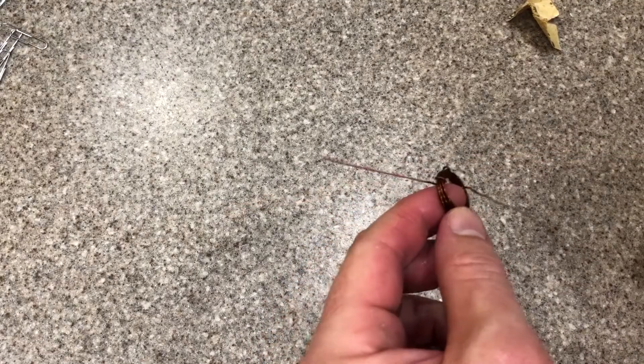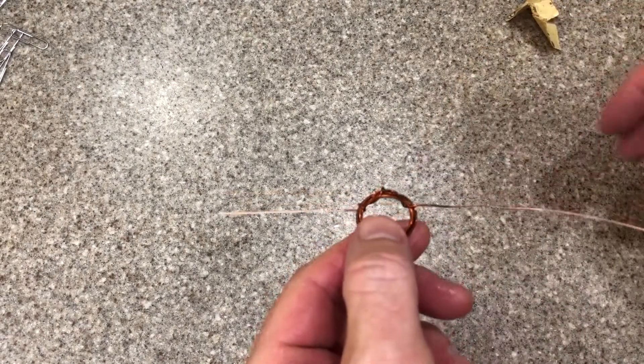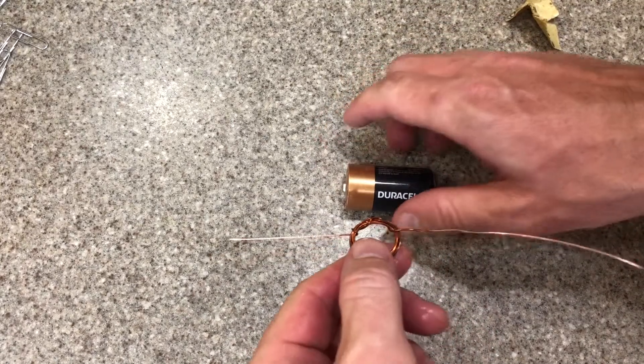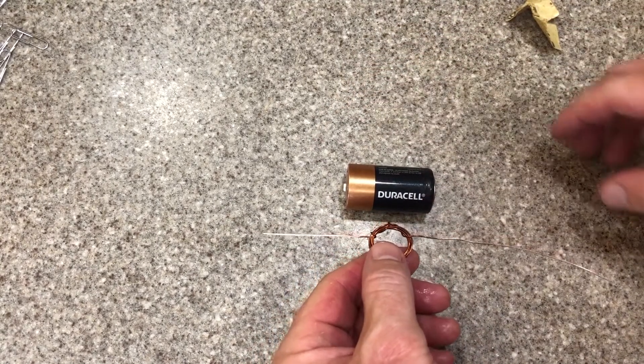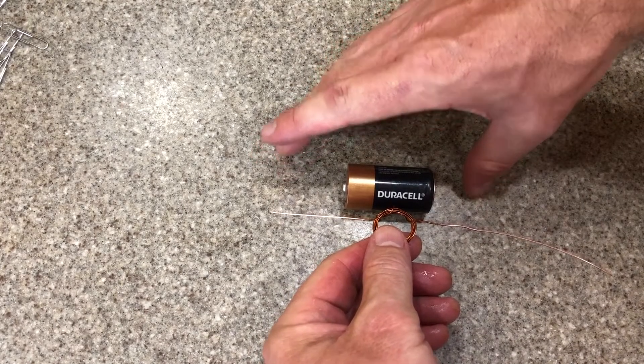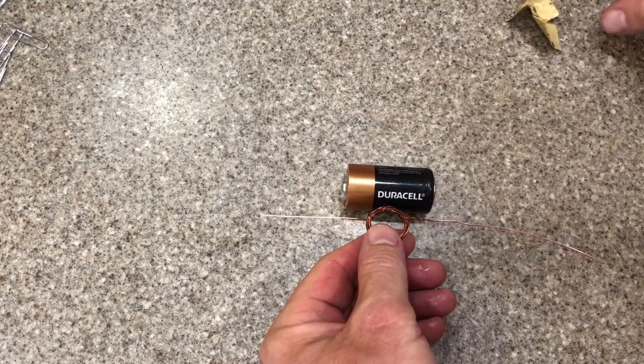Now that you've got those ends sanded down, make sure they're nice and shiny. That means it'll make good contact. Take it and lay it next to the battery. We're going to cut off enough slack such that it slightly extends over the battery, but not too much. Leave about an inch slack on each side and then cut the wire.